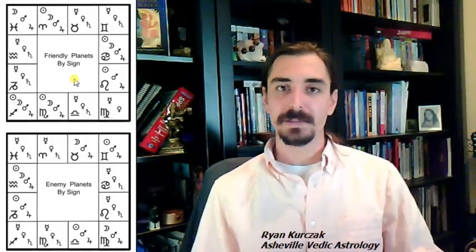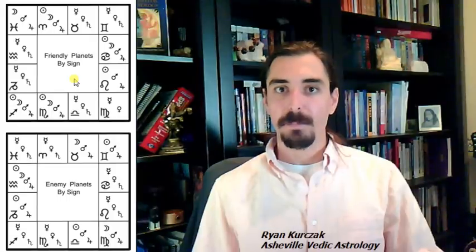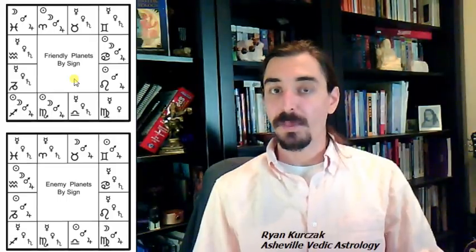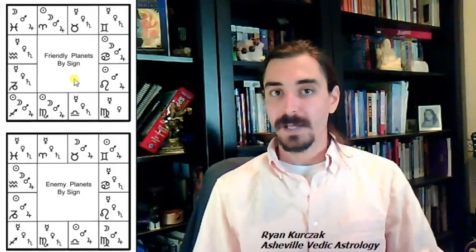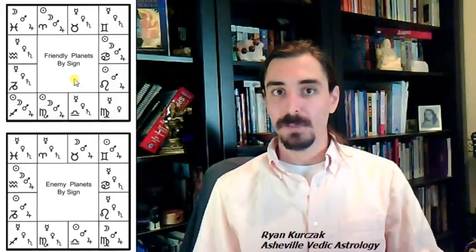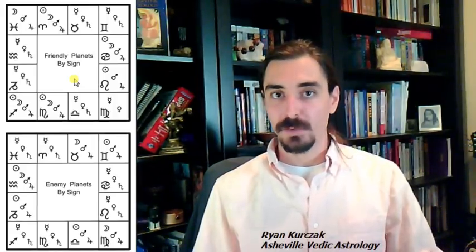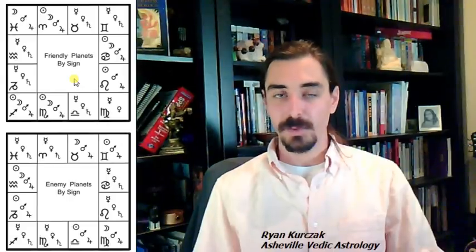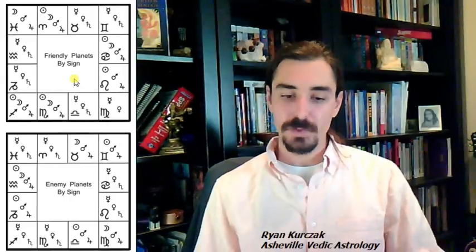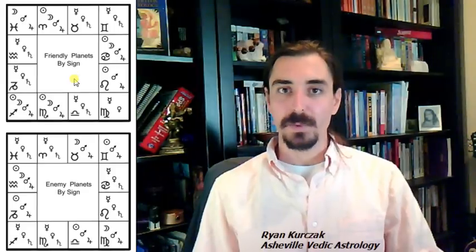The benefic planets are Jupiter, Venus, Mercury when he's not with a malefic. So, Mercury acts like any planet he's with. If he's by himself, he's a benefic. If he's with a benefic, he's a benefic. If he's closer to a malefic, in the same sign, closer to a malefic, he acts malefic. And we'll discuss this in a minute. So Jupiter, Venus, Mercury, and the waxing moon.